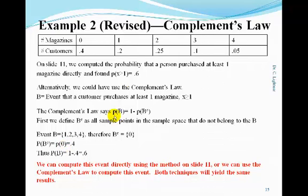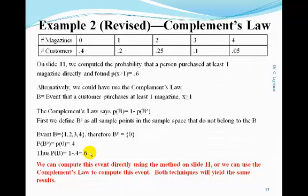So using the complement's rule, the probability of the event that we want is equal to 1 minus the probability of its complement, or 0.6. As you see, we get the same exact value that we got when we computed it directly on slide 11. Both techniques will always yield the same results.